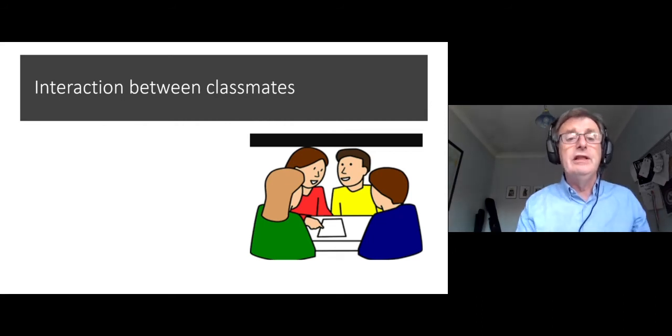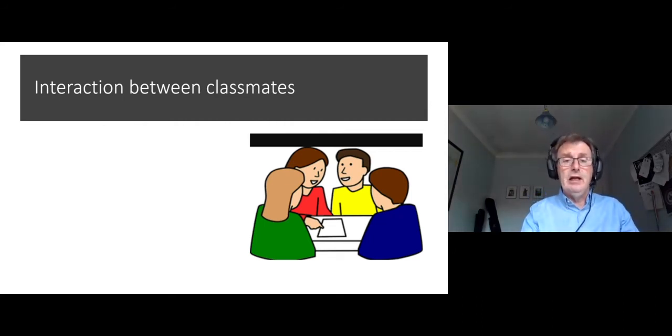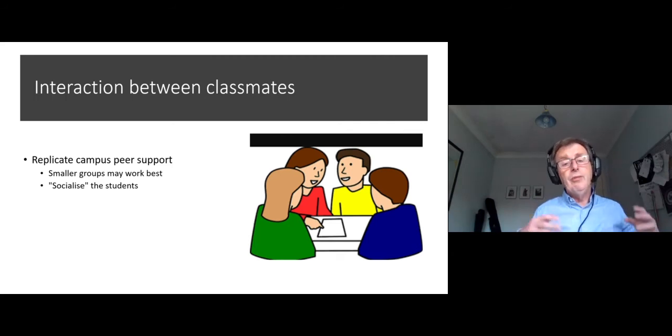Now the third part of the communication is interaction between classmates. To some extent, what we want to do is replicate the campus peer support. Now you may have students on campus and students off campus. The students on campus are probably fine. It's generally been found that students on campus don't use these forums at all, don't use the electronic discussion because they meet each other. But for the ones that are off campus, it may be important for them.